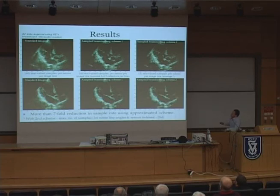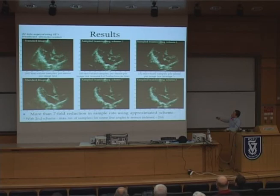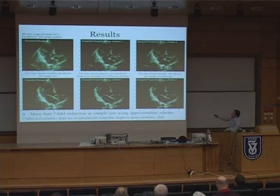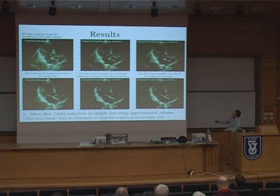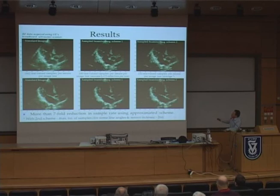These are some results obtained using both our schemes. The data was obtained from GE's breadboard ultrasonic scanner. In the left column are two frames of cardiac imaging generated using standard imaging techniques. The middle and right columns were generated using our first and second schemes respectively — the second scheme approximating the first. The images resemble one another very well, and both schemes successfully recover the strong perturbations visible in the standard image. These images were obtained at almost an eightfold reduction in sample rate, which is quite impressive.